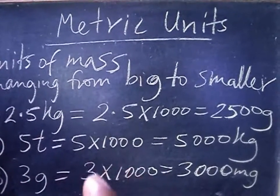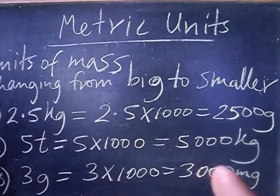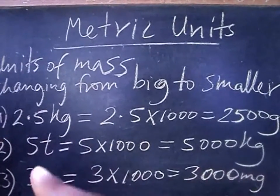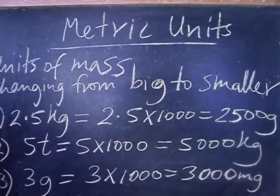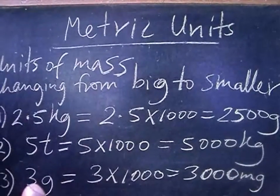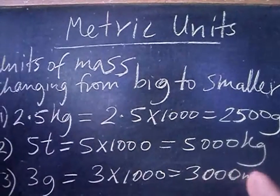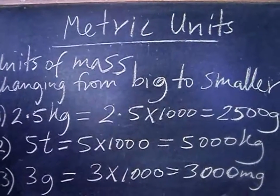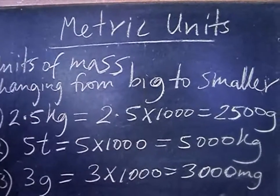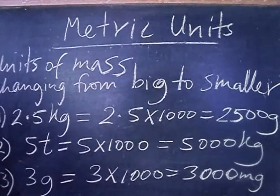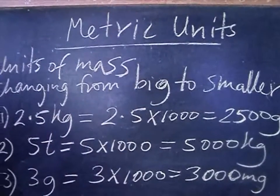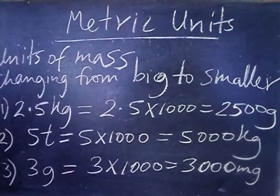Moving from grams to milligrams: three grams multiplied by one thousand gives three thousand milligrams. When converting from grams to milligrams, you multiply by one thousand. Remember, moving from big to smaller units, you always multiply.